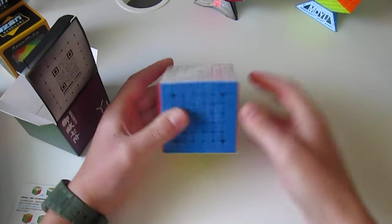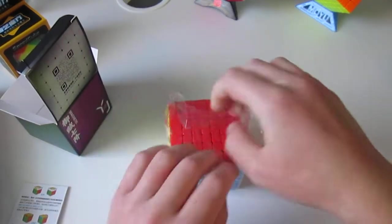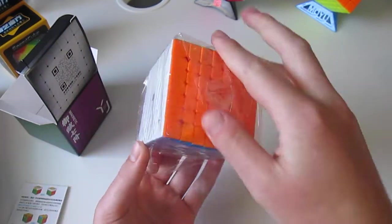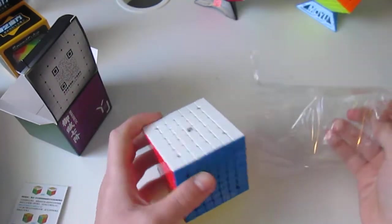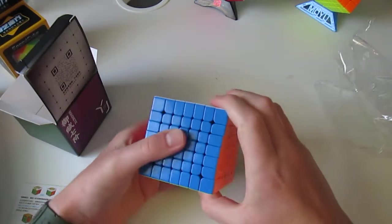So yeah, pretty cool to complete my collection of 2x2 to 7x7 magnetic cubes, because my old 7x7 is not magnetic. Oh yeah, there's lots of lube on the outside. I'm going to have to clean that off. Let's do some first turns.